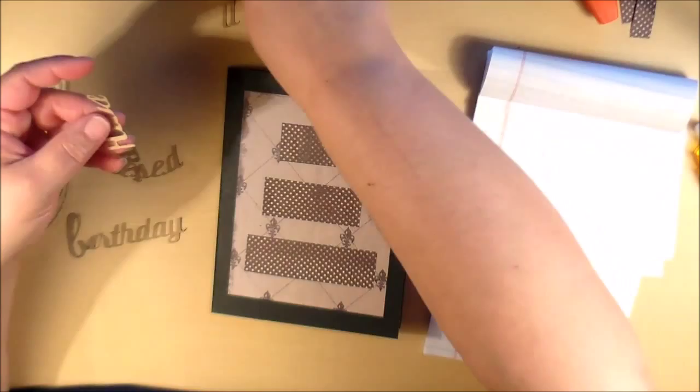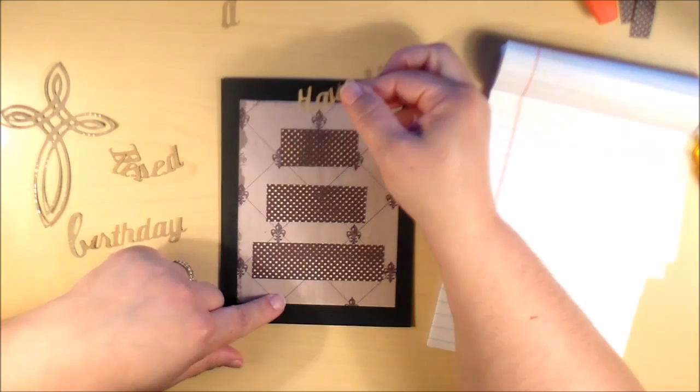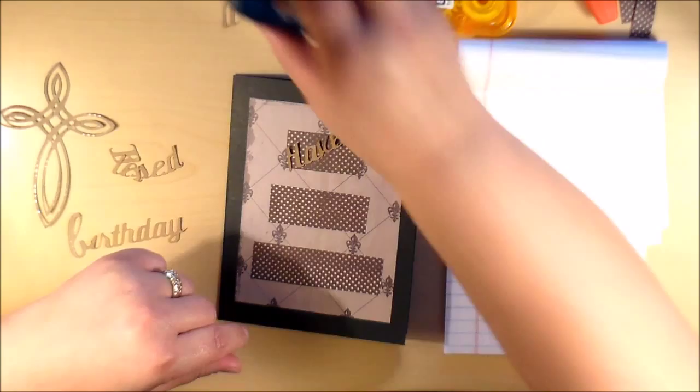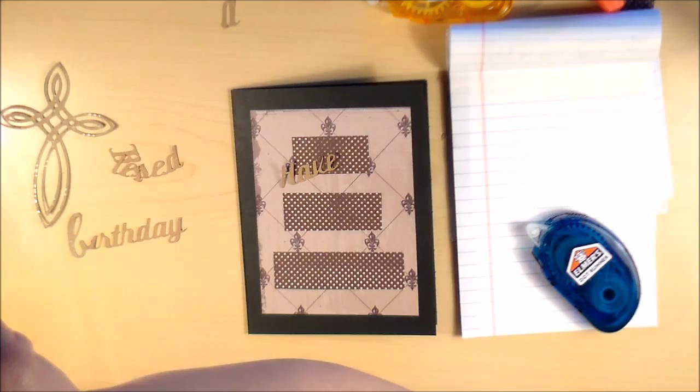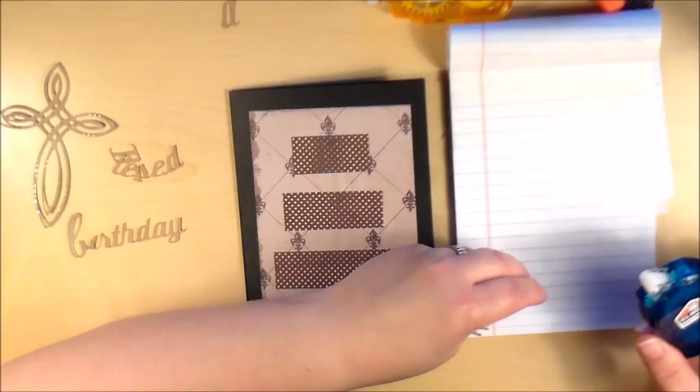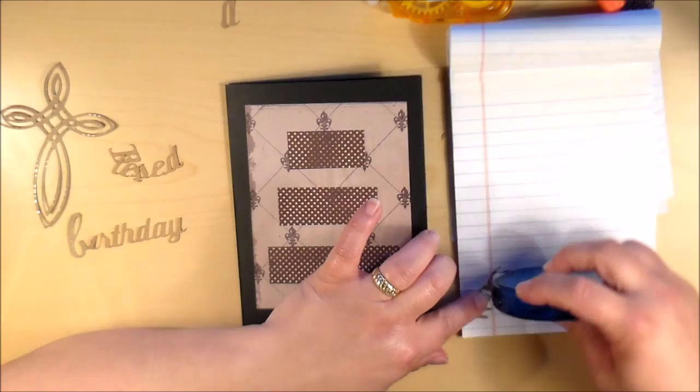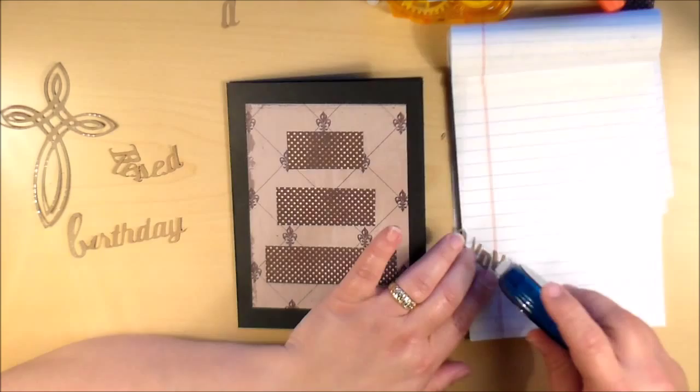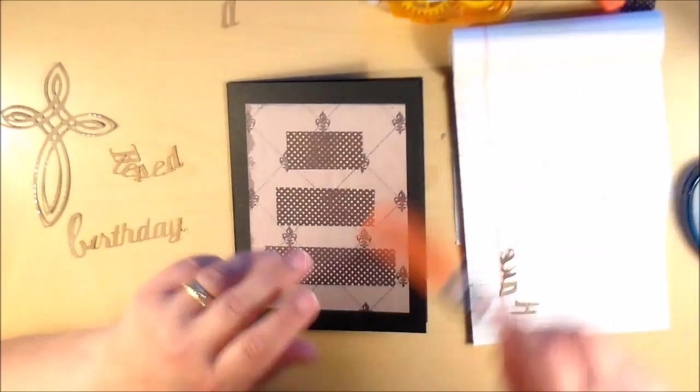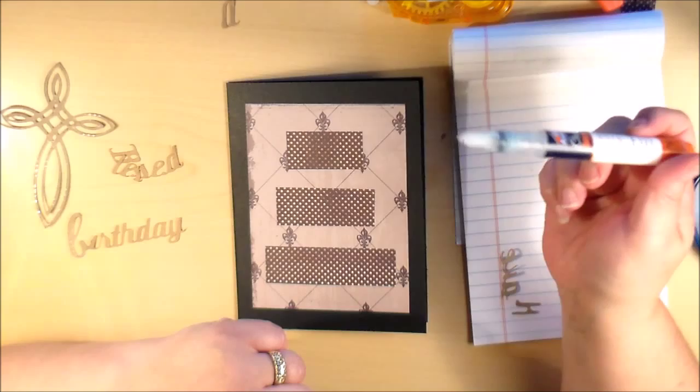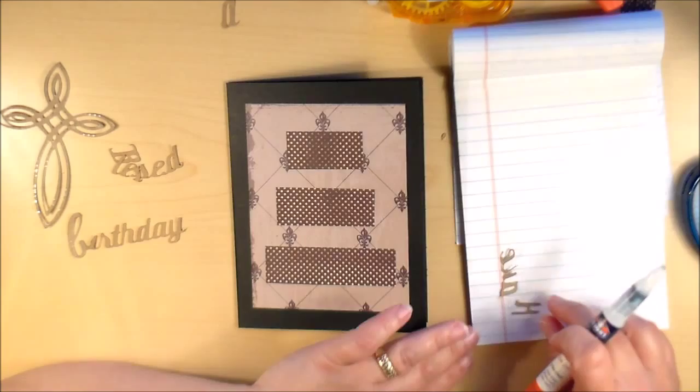I really have struggled with what am I going to use to adhere these letters down with. I'm just not sure what is going to be the best adhesive. I thought maybe the dot runner but these little letters are so delicate. I'm just not sure that the dot runner isn't going to be too rough on them. And the only problem I have with the glue pen is just the length of time that it takes to dry.